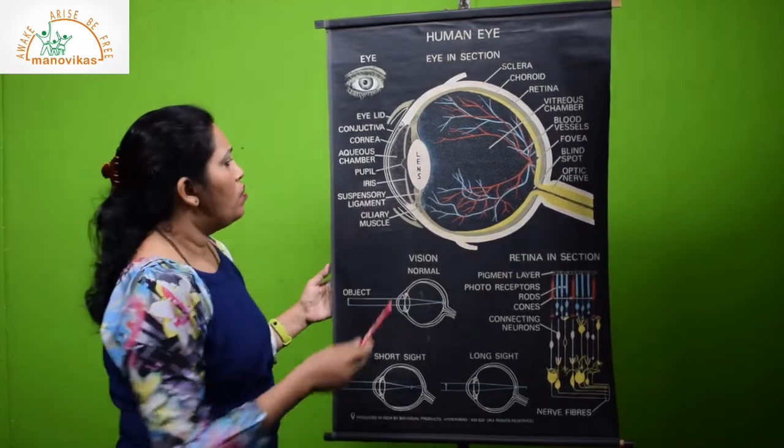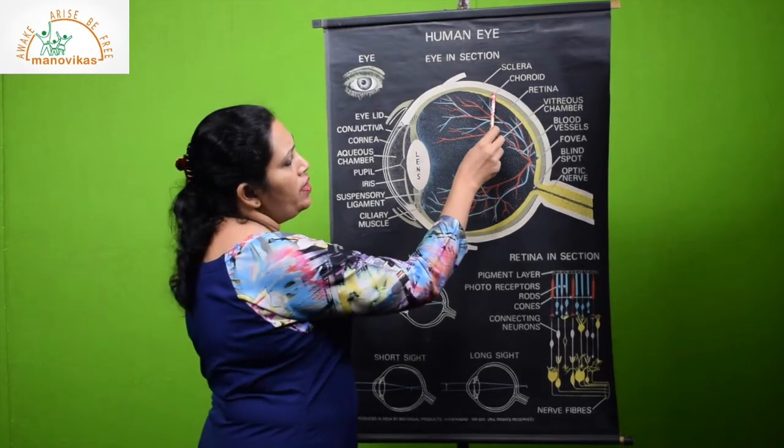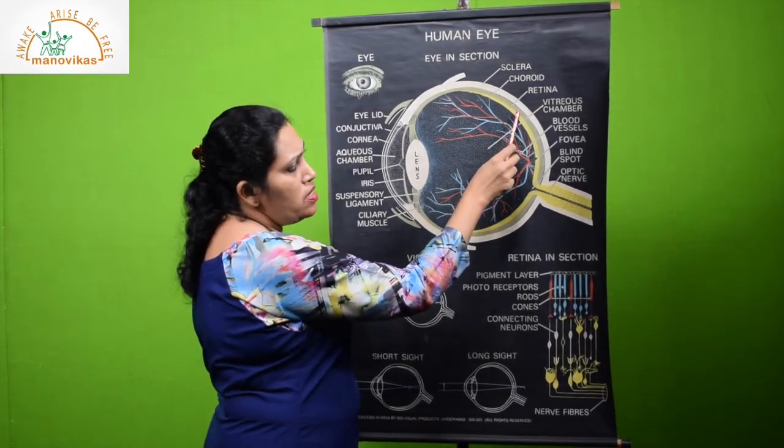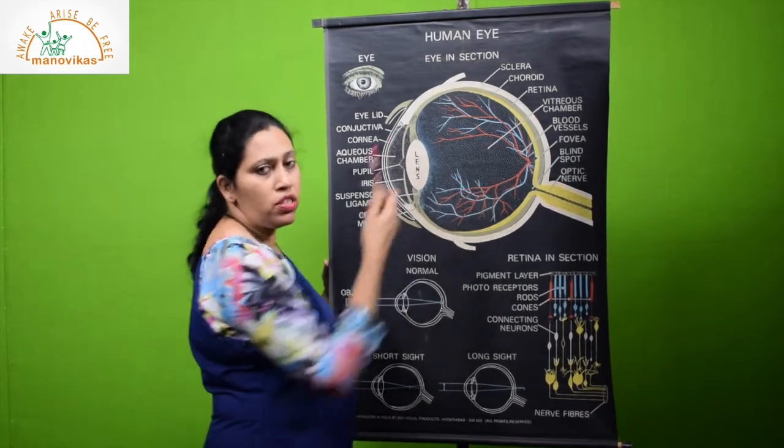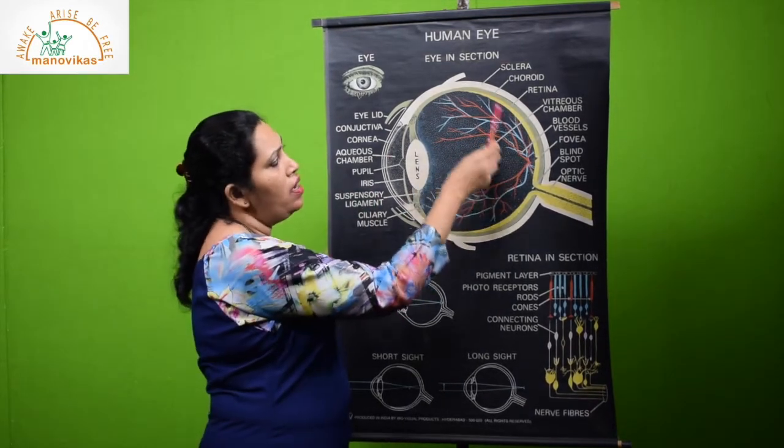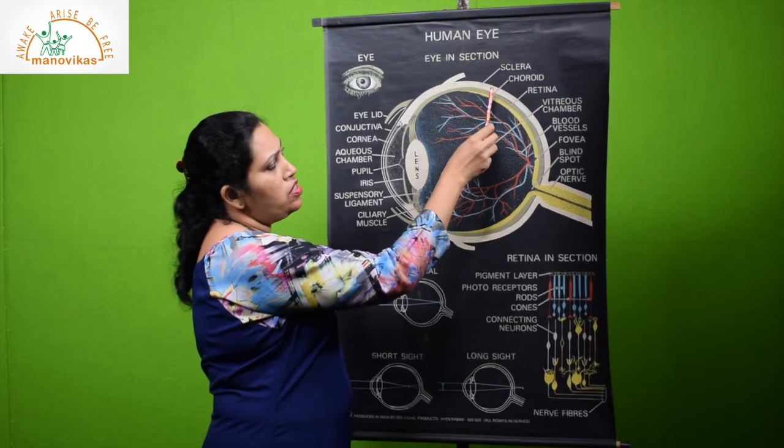The second layer is supplied with blood vessels, the choroid, and it nourishes the eye because the blood will bring oxygen to each cell of the eye. So it has a rich supply of blood and it nourishes the eye.